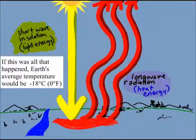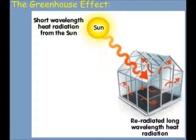If this was the only thing that happened, the Earth's average temperature would be negative 18 degrees Celsius or zero degrees Fahrenheit. Fortunately, we have something called the greenhouse effect.